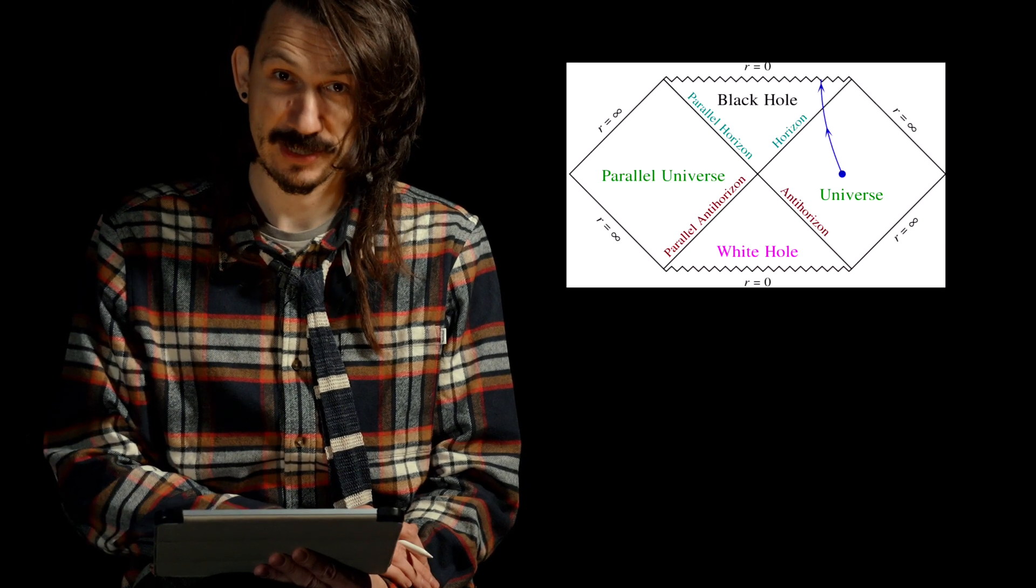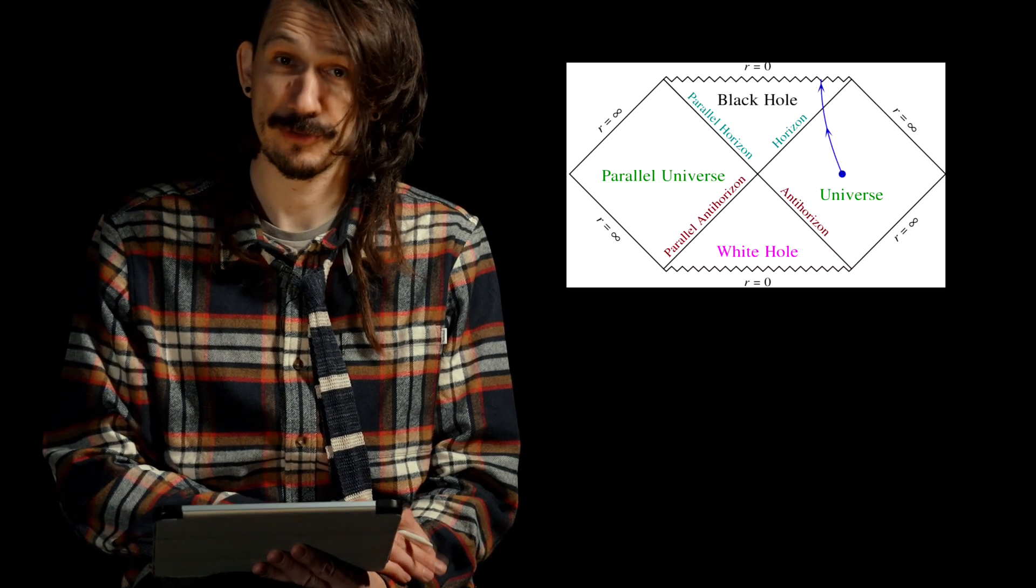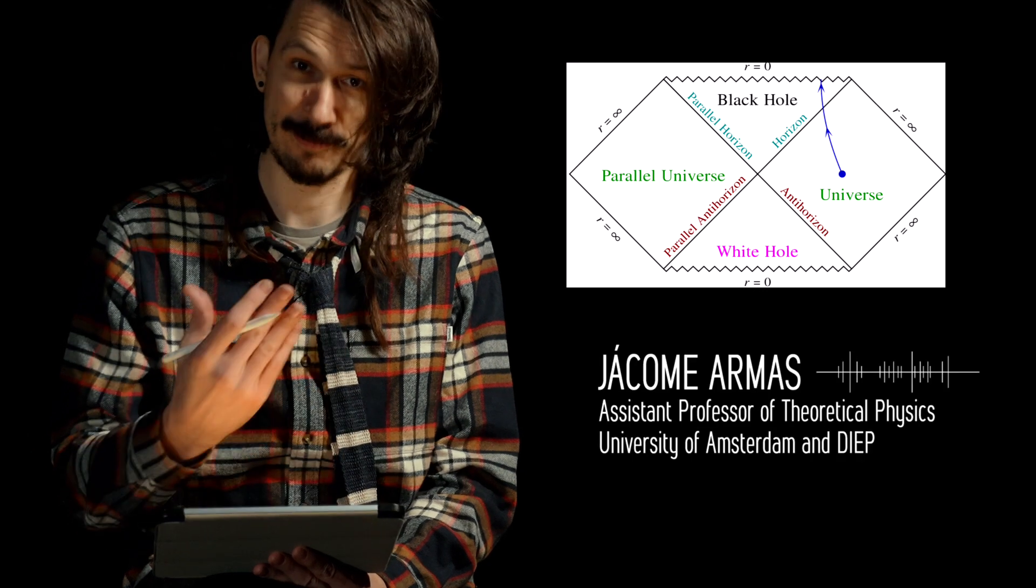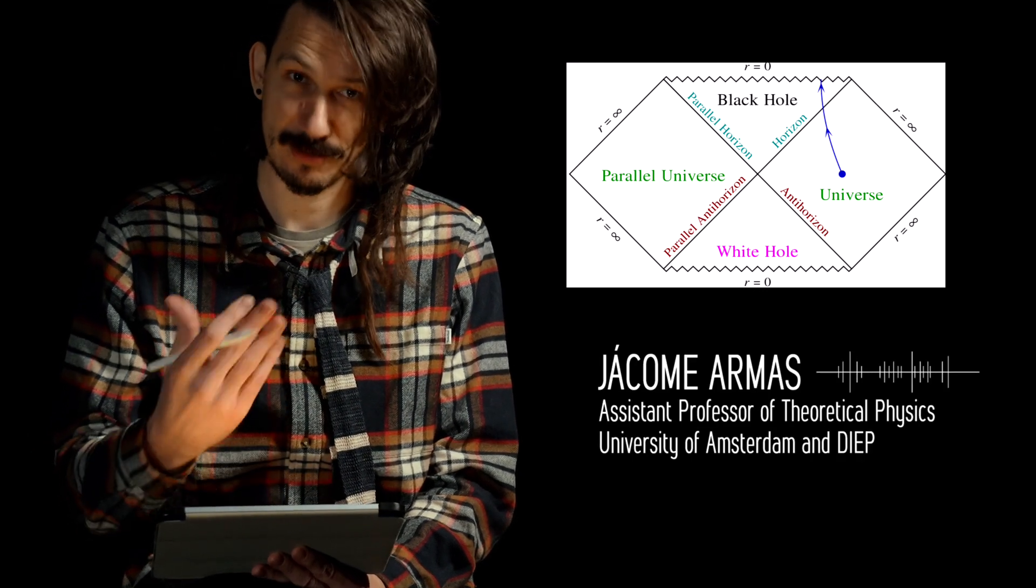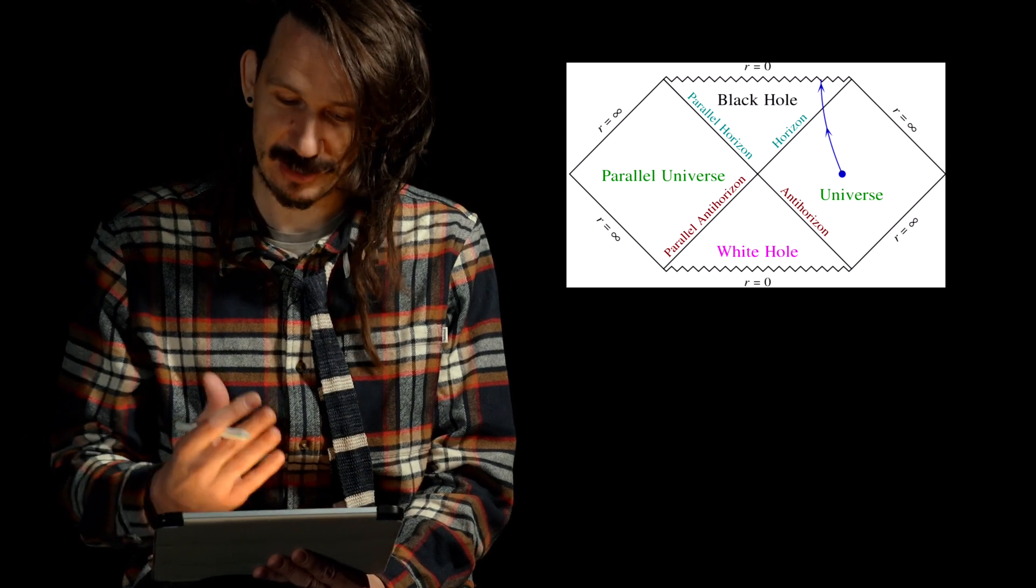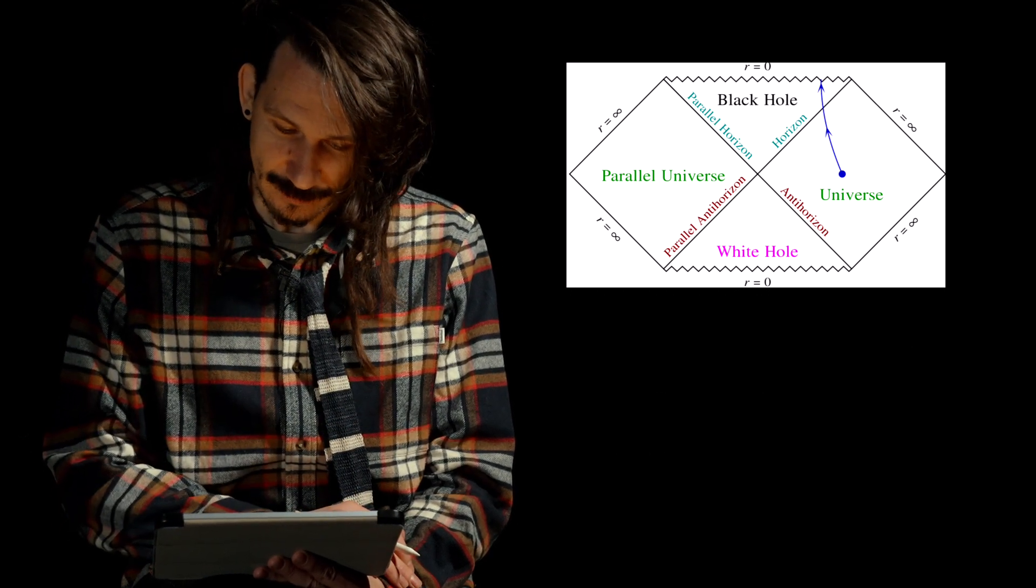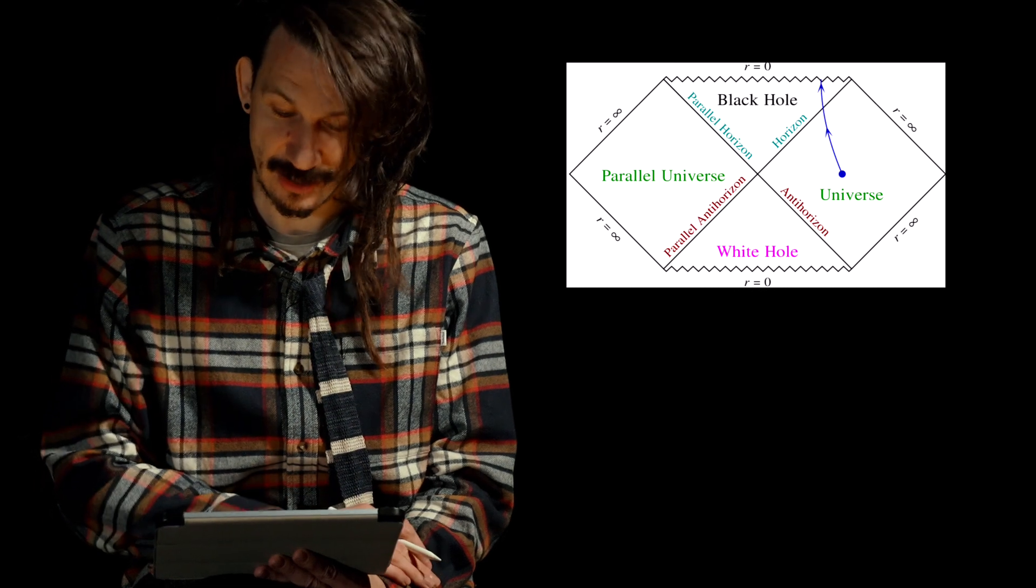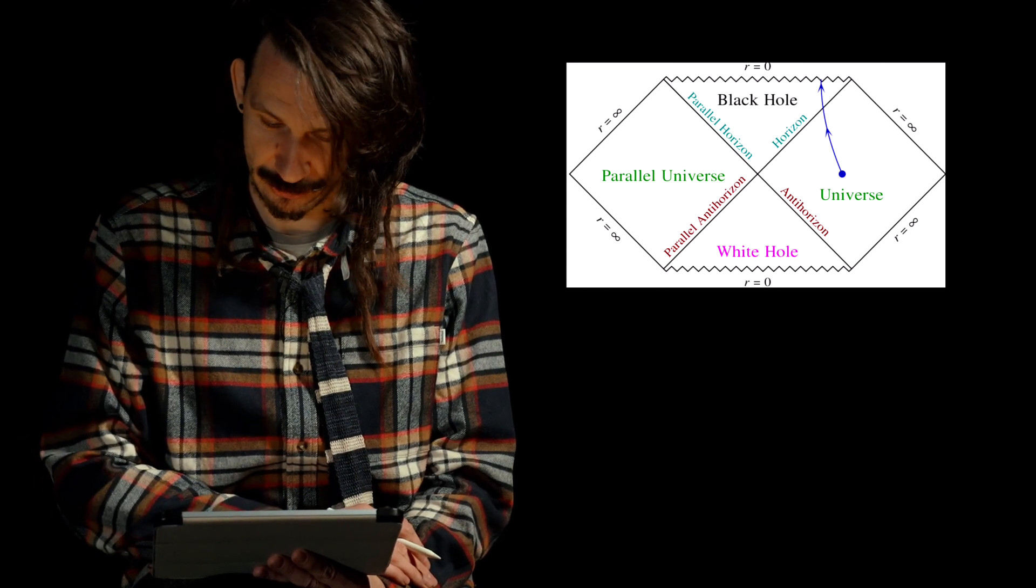So, this is a representation of a Penrose diagram for a Schwarzschild black hole, which is a black hole that does not rotate and therefore is a little bit unrealistic, but the representation is simple enough that it's easy to explain what a Penrose diagram is.